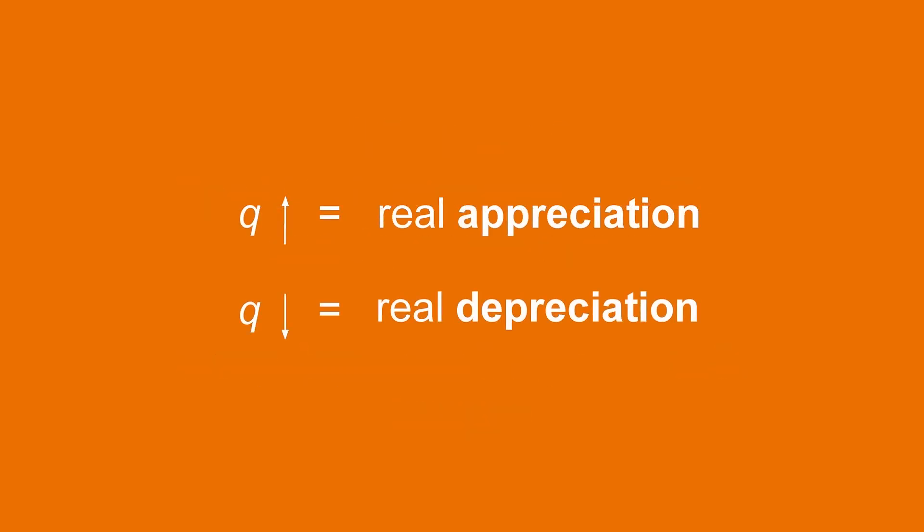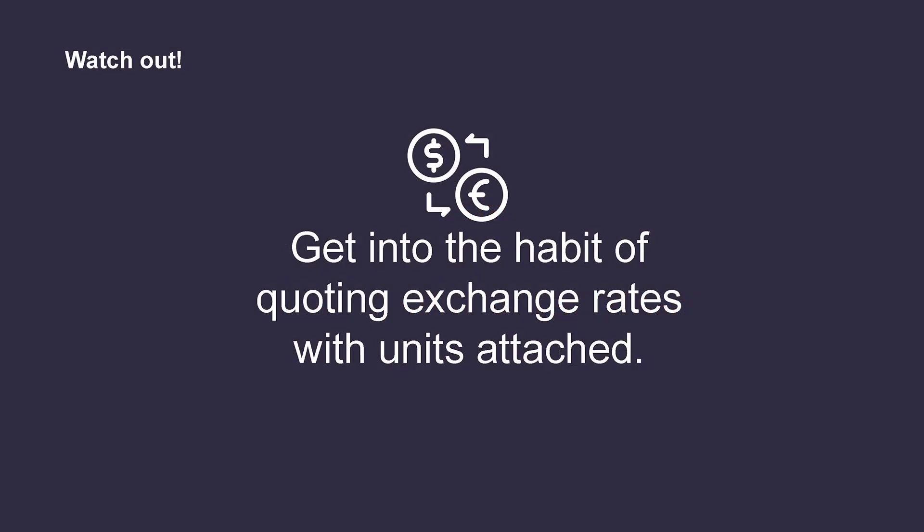With this interpretation for the real exchange rate, we say the US dollar experiences real appreciation if Q rises and real depreciation if Q declines. Because exchange rates can be quoted in two different ways, it can get incredibly confusing. So get into the habit of quoting exchange rates with units attached. For example, instead of just saying E equals 100, say that E is 100 yen for one US dollar. Similarly, instead of simply stating Q equals 1.25, say the real exchange rate is 1.25 Japanese burgers for one US burger. When you specify the units, either in your head or out loud, it helps you remember the definition and interpret the exchange rate appropriately.